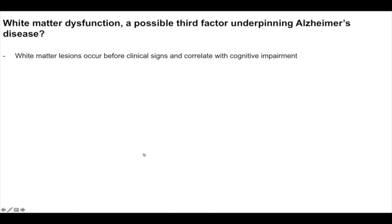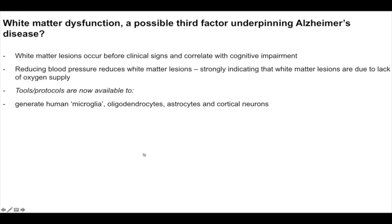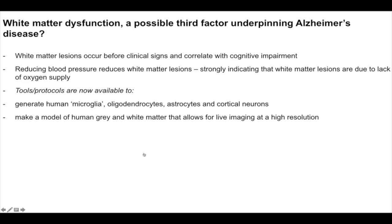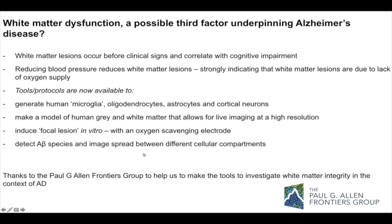In conclusion: white matter lesions seem to occur before clinical signs and correlate with cognitive impairment. Reducing blood pressure reduces white matter lesions, indicating they are due to lack of oxygen supply. We have generated all needed glial cell and neuronal types, built microfluidic devices for live high-resolution imaging, mounted electrodes for focal in vitro lesions, and can now detect A-beta species and image their spread between cellular compartments. Thanks to the Allen Frontiers group for believing this was possible.